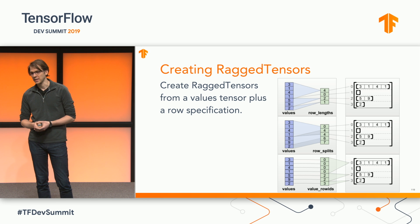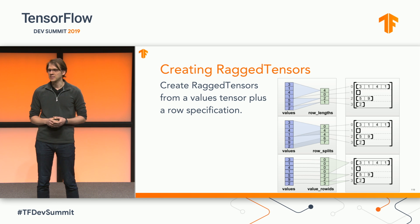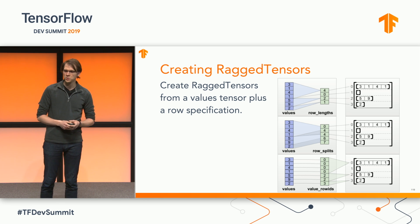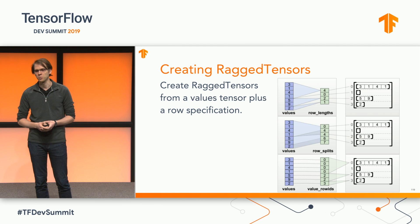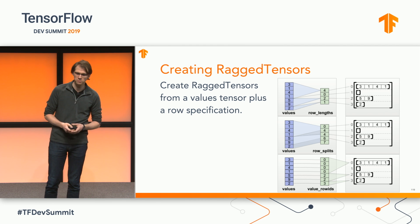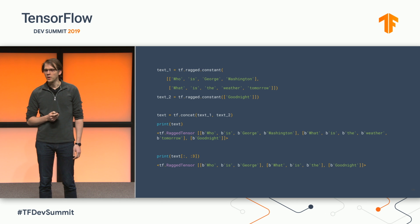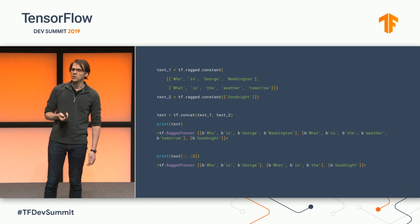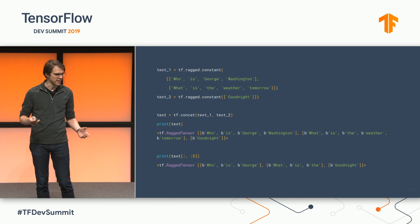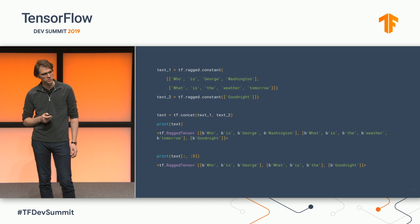So, how do you use ragged tensors? Let's start with building them. To create a ragged tensor, you'll need a flat tensor of values, and some specification on how to split those values into batch items. Once you have a ragged tensor, you can perform standard tensor operations on it, like concatenation and slicing, even within irregular dimensions.